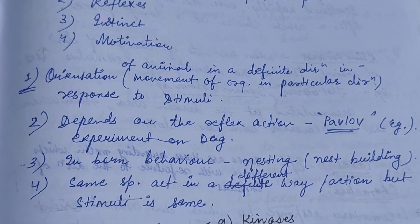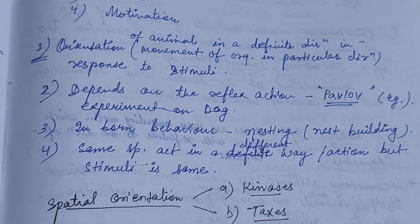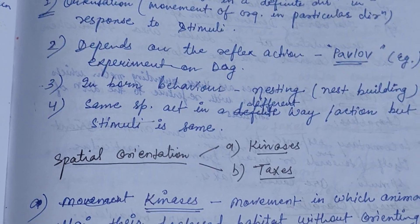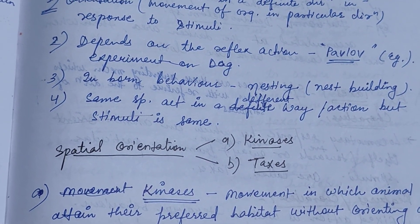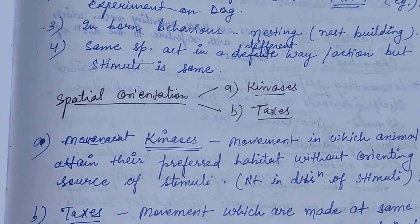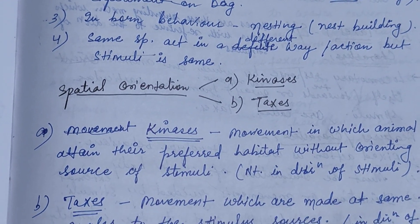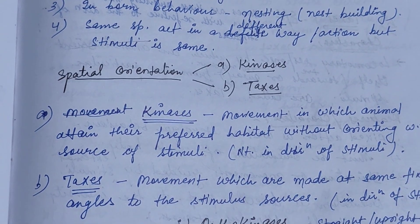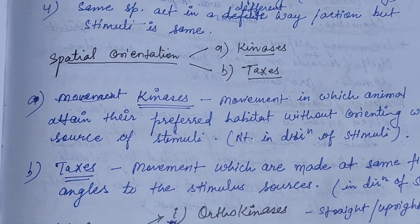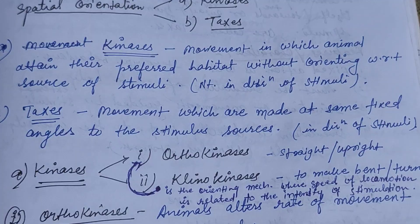There are four types of stereotype behavior: special orientation, reflexes, instinct, and motivation. Special orientation involves movement of an organism in a particular direction in response to stimuli. Reflexes depend on reflex action, as given by Pavlov's experiment on dogs. Instinct is inborn behavior — nest building is an example. Motivation: when the same species acts in a different way to the same stimuli, it is known as motivation. Special orientation may be kinases or taxis.